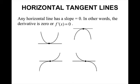Horizontal tangent lines. Any horizontal line has a slope of 0 — in other words, the derivative equals 0, or f prime equals 0. There are four scenarios where you will have horizontal tangent lines: at valleys, at hills, and at points like a cubic function's S-shape — those are also horizontal tangent lines.